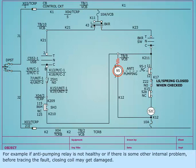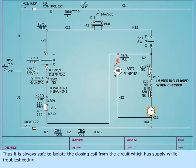For example, if the anti-pumping relay is not healthy or if there is some other internal problem, before tracing the fault, the closing coil may get damaged. Thus, it is always safe to isolate the closing coil from the circuit which has supply while troubleshooting.